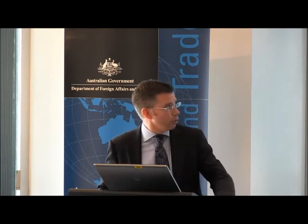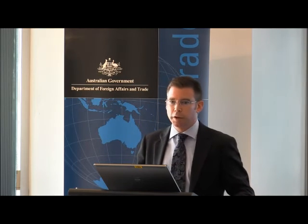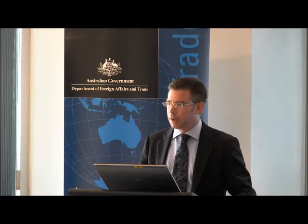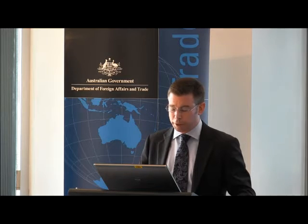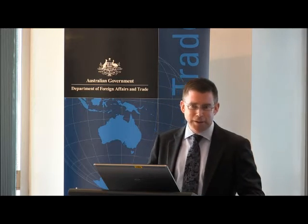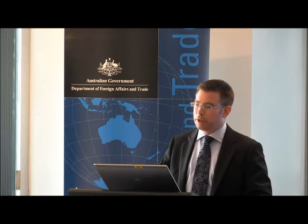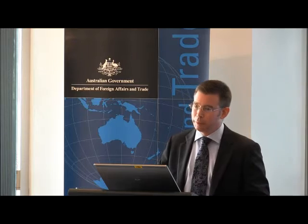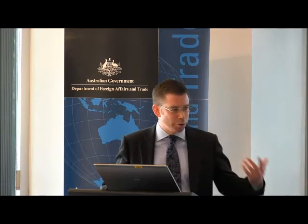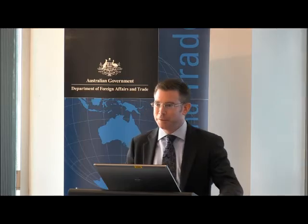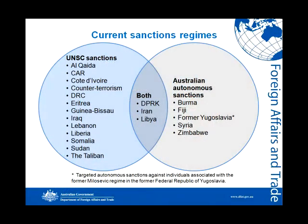This diagram shows the current sanctions regimes that we implement — a total of 24 regimes at the moment. We put together this slide last Thursday; it came out of date on Friday. The UNSC last Friday adopted a new sanctions regime in relation to Yemen, so we're in the process of implementing that domestically. I draw your attention to the overlap of the two circles — we implement both UNSC sanctions and autonomous sanctions in relation to three countries: North Korea, Iran, and Libya.